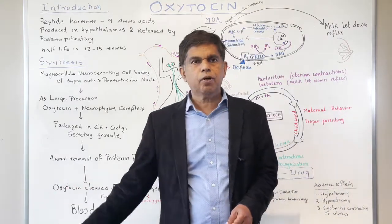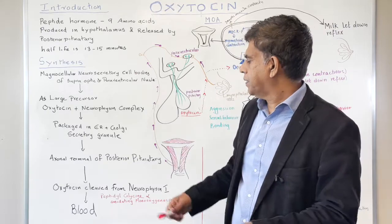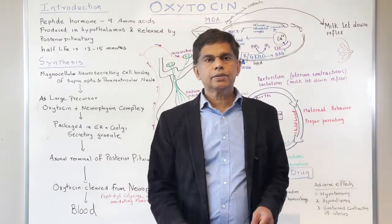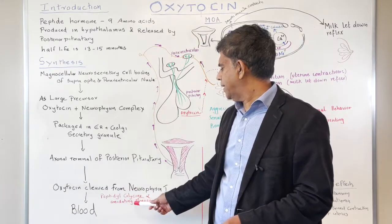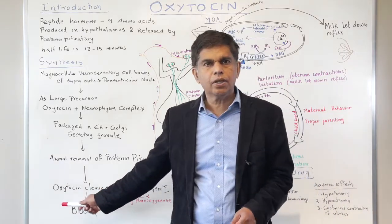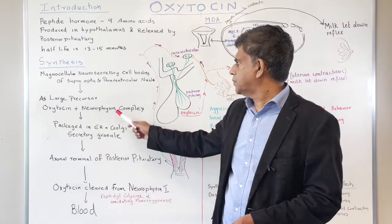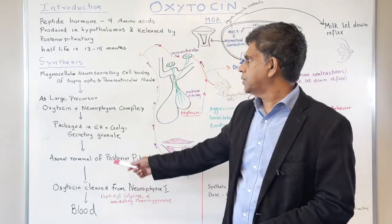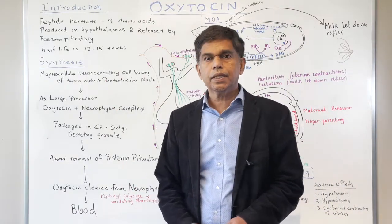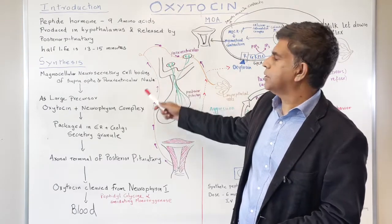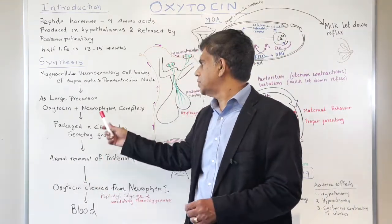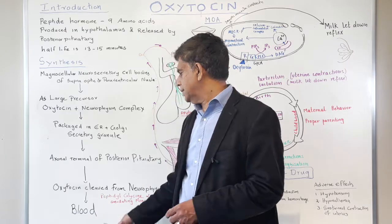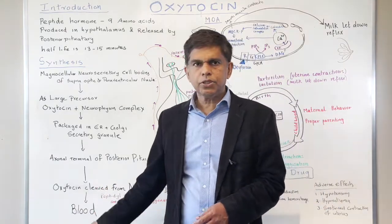In the final step, oxytocin is cleaved from the oxytocin-neurophysin complex. There is an enzyme — peptidylglycine alpha-amidating monooxygenase — that helps cleave the oxytocin from the precursor. The neurophysin complex is removed, and oxytocin is then released into the blood.